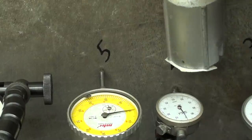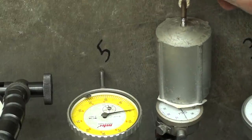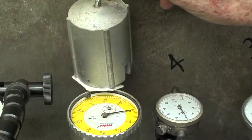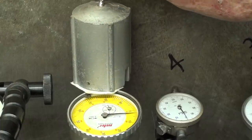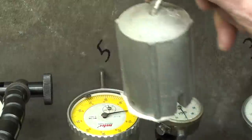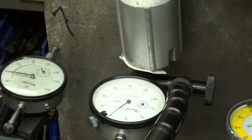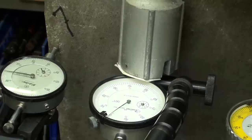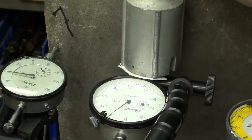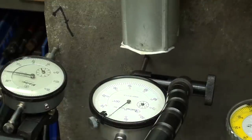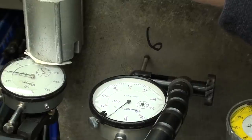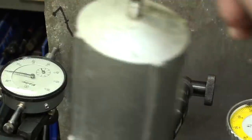Number four: about three thousandths. Five: two and a half thousandths. Six: one thousandth or less. And seven: about a half a thousandth.